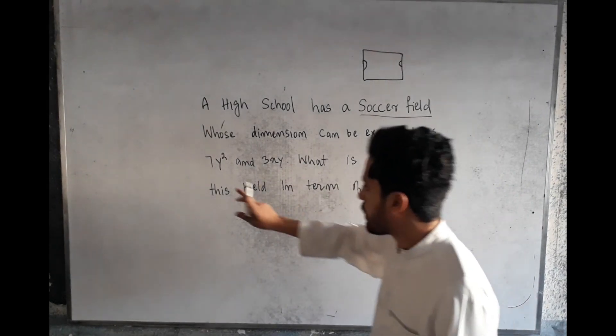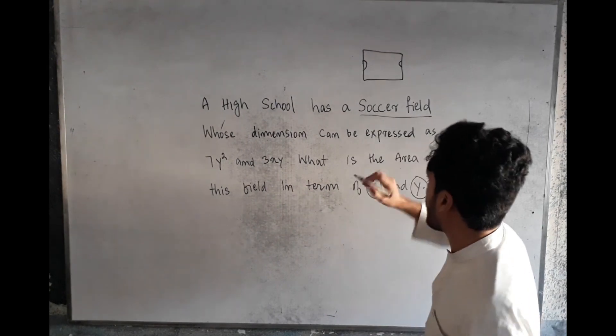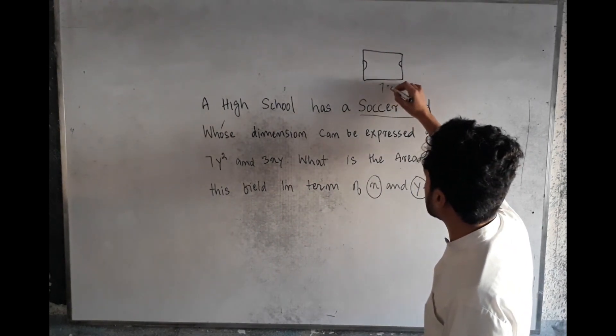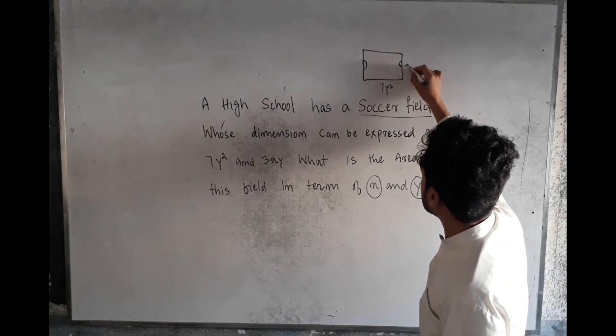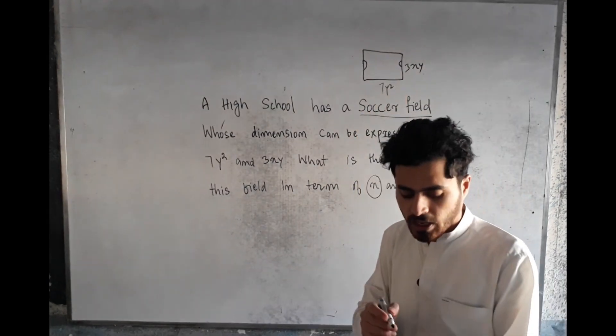This is 7y² and this is 3xy. What is the area? Now you have to multiply 7y² with 3xy.